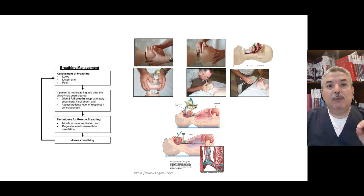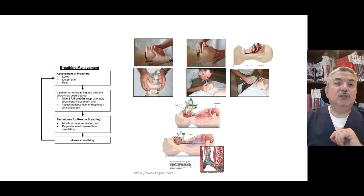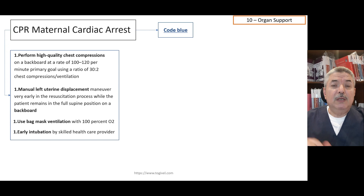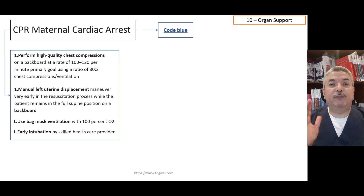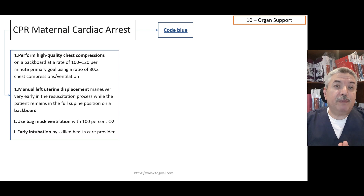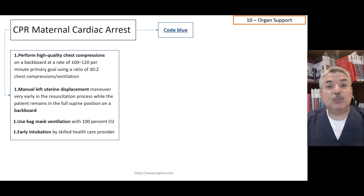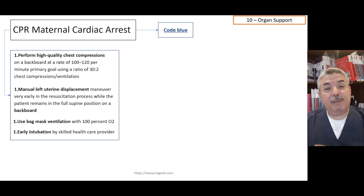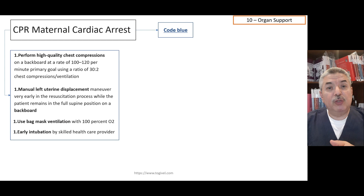The most important thing in cardiopulmonary arrest is to perform early intubation. When you alarm code blue, the whole team comes in with the defibrillator. For a pregnant patient, the key differences are: early intubation, use of 100% oxygen because of increased oxygen needs in pregnancy, the patient's back must be on a flat board for effective compressions, and you must displace the uterus to the left in order not to obstruct the inferior vena cava and circulation.